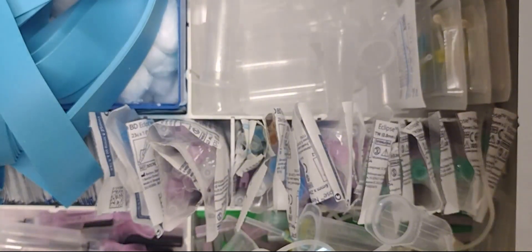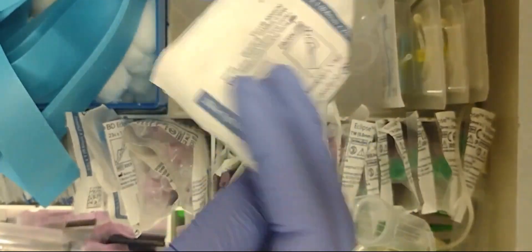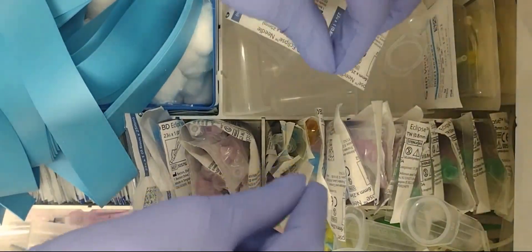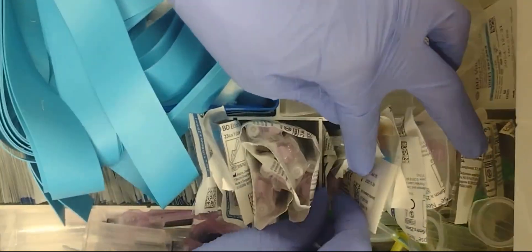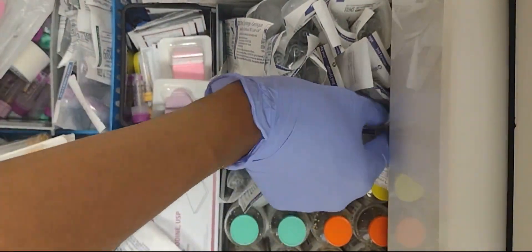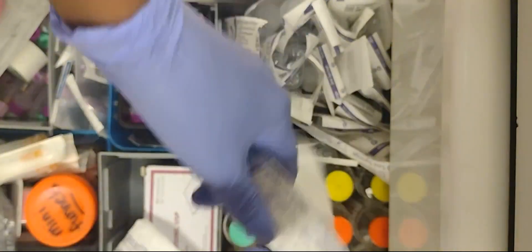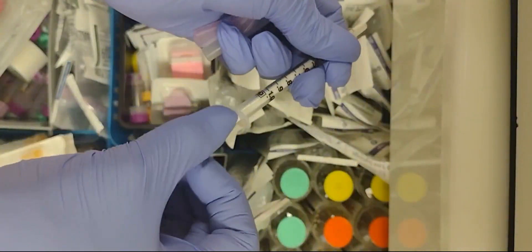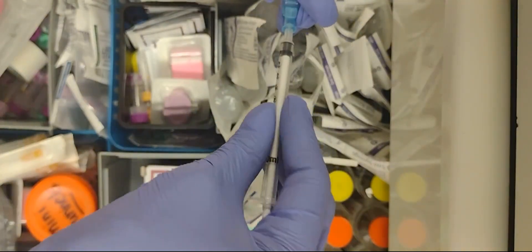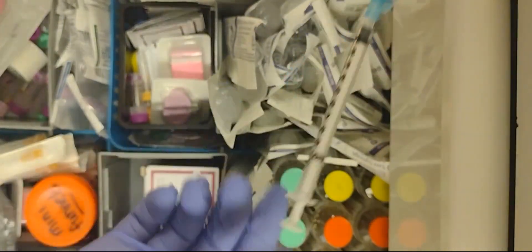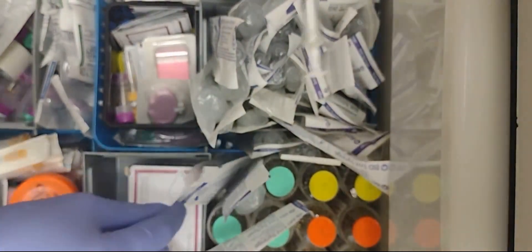So I do want to show y'all the eclipse needles we use when we're doing blood cultures. What we do with this—I got one that's open already for this video—we take this needle after we had already gathered the blood. I will demonstrate it with the one milliliter syringe. So I believe I've already gotten the blood from either a butterfly or most times it won't be a butterfly. So all you're doing is twisting it on the end.